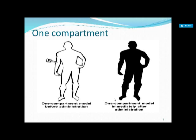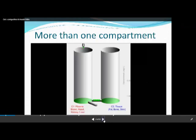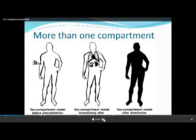In the one compartment model, before administration the body is like this, and after administration the complete drug distributes throughout the body immediately. In the case of two compartments — plasma, blood, heart, kidney, liver on one side and tissue, bone, and skin on the other — the drug distributes first in the heart, lungs, and kidney, and only after some time does it distribute throughout the body. So it takes more time compared to the one compartment model.